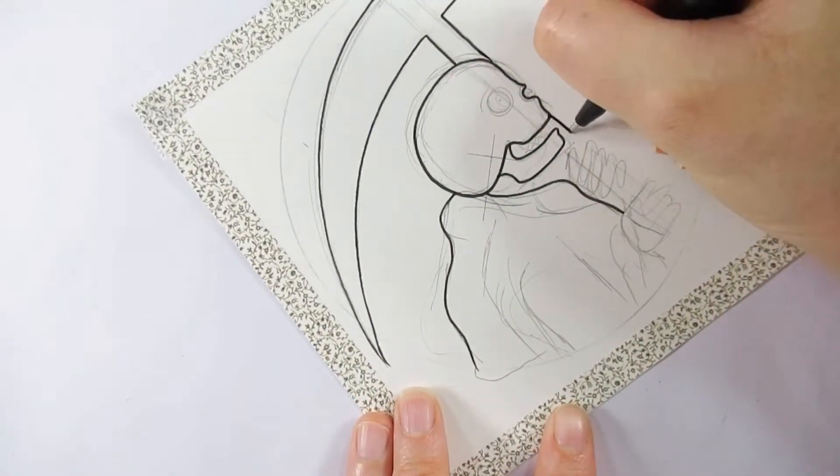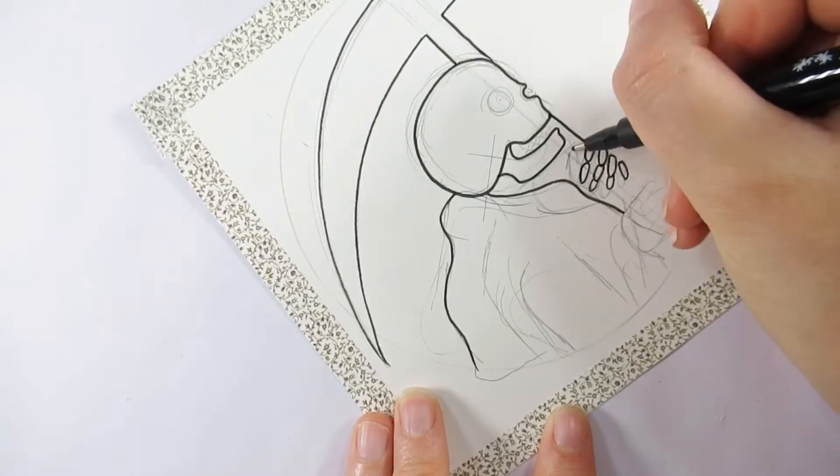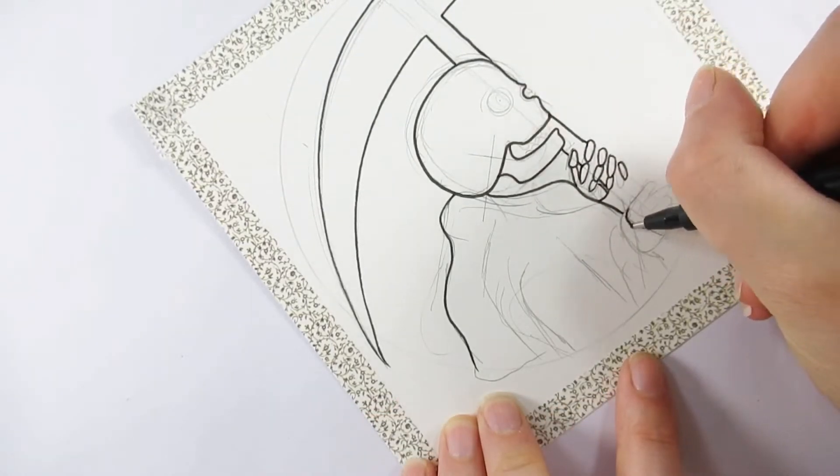None better than to draw the grim reaper and his scythe, and there's the blade. I've started this out with a liner pen and I'm just going around my pre-sketched drawing.